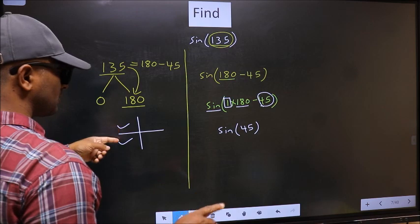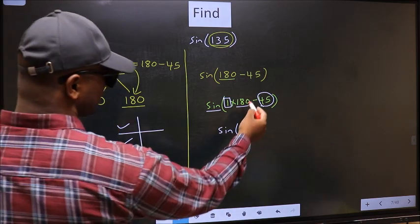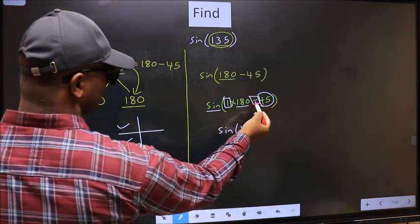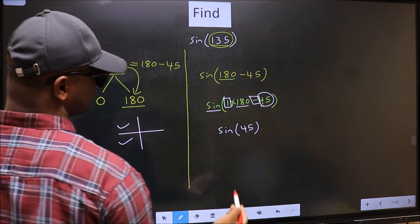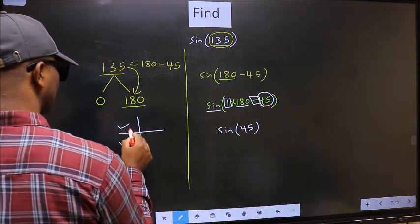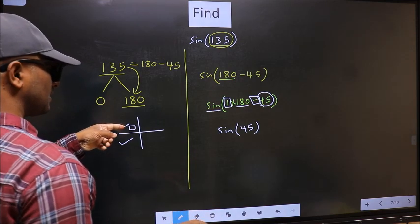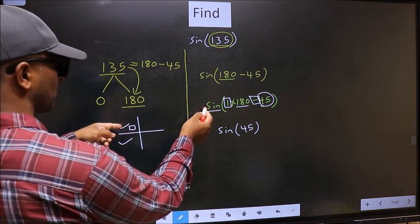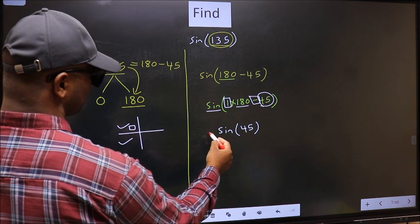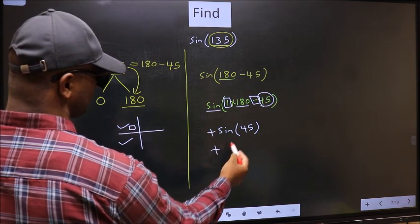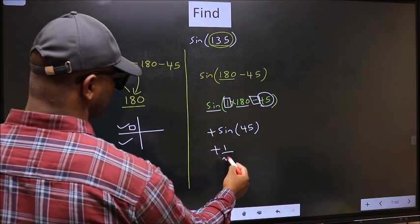So now to select the quadrant, we should look at this symbol. Here we have negative. That means the angle lies in the second quadrant. And in the second quadrant, sine is positive. So we should put plus. So plus sine 45 is 1 by root 2.